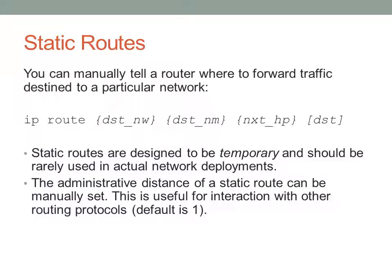Administrative distance can be manually set, which is useful for interaction with other protocols. The default administrative distance for a static route is 1. The default administrative distance for a directly connected route is zero. Sort of like spanning tree, the lowest administrative distance is going to be the best - same thing with metric. You want the lowest metric or the lowest cost to get wherever it is you need to go, so lower is better.